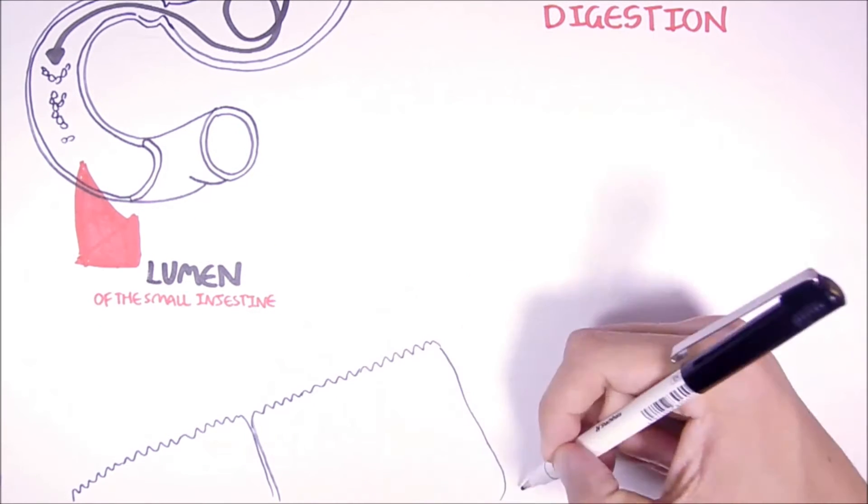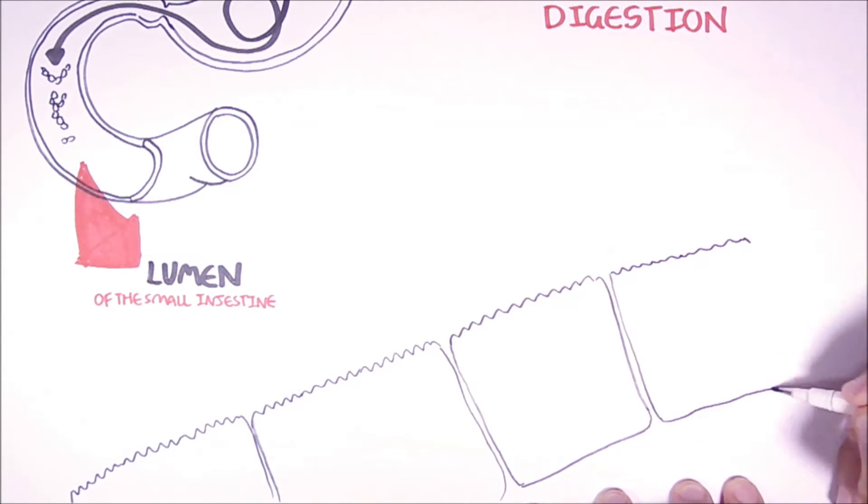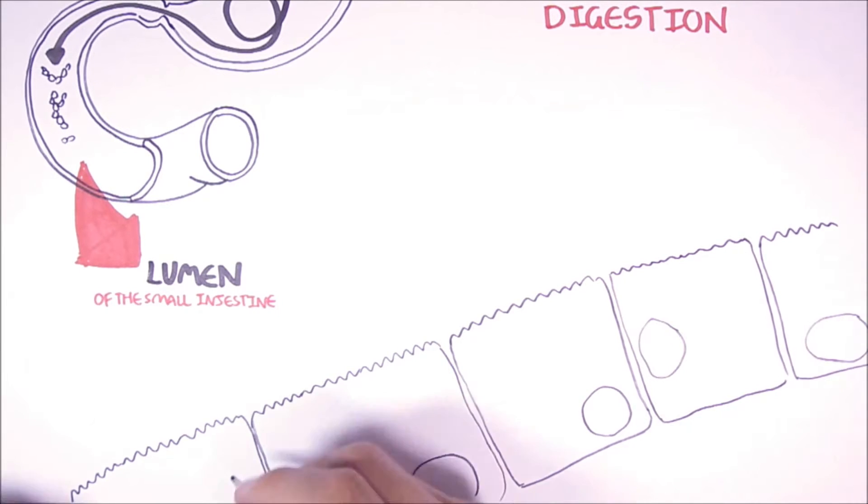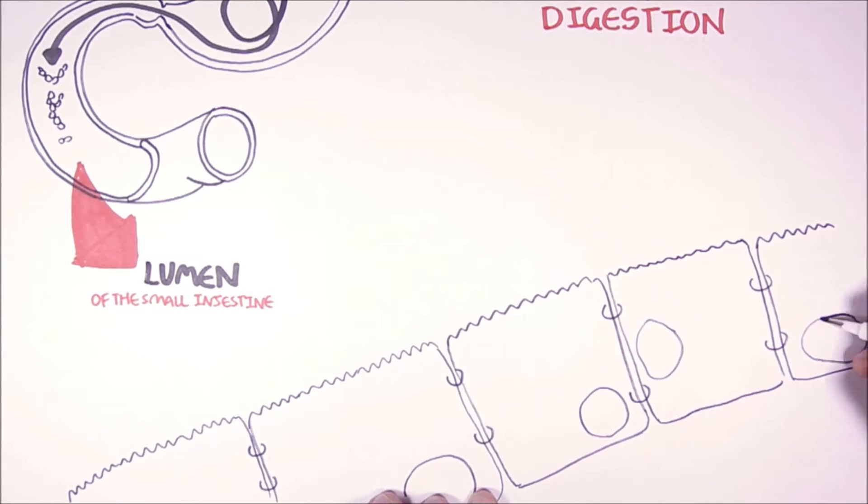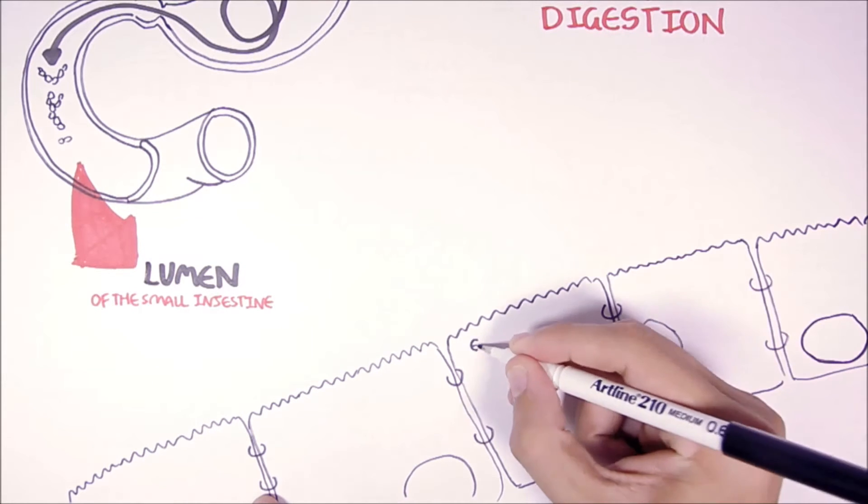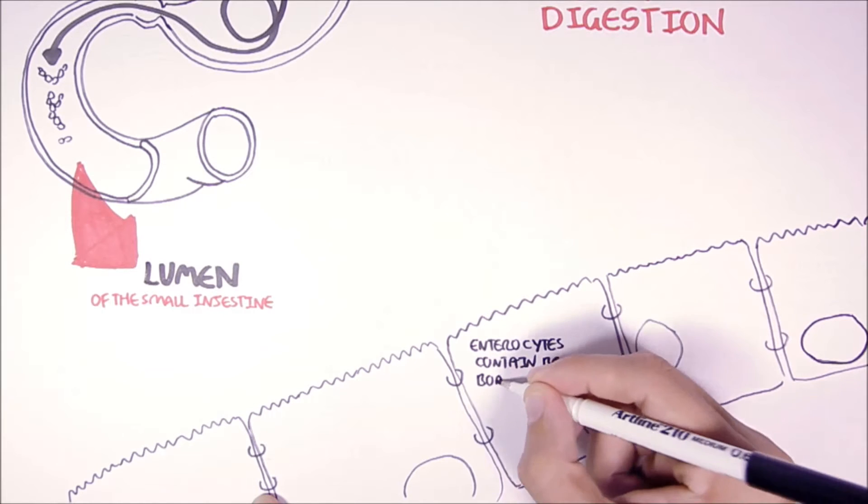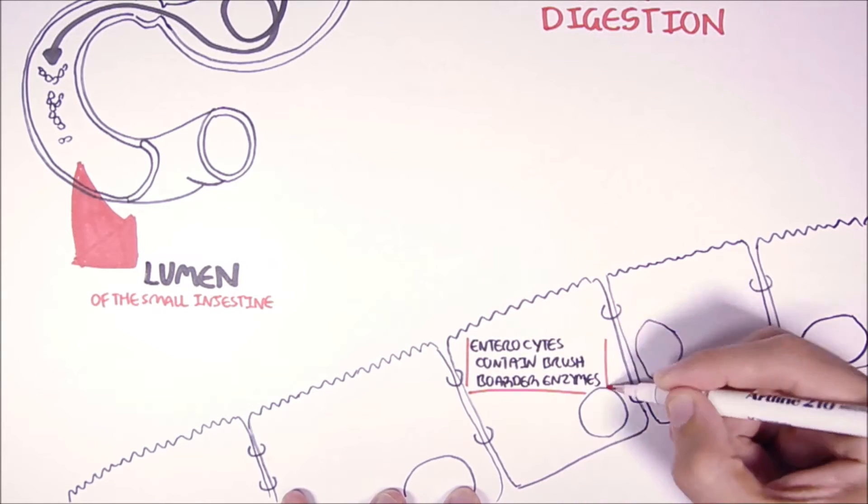Within the lumen of the small intestine we can find the cells of the intestine known as enterocytes. The enterocytes are also called the absorptive cells because they absorb the nutrients. But the enterocytes also contain these enzymes called brush border enzymes that play a role in the digestion of starch.